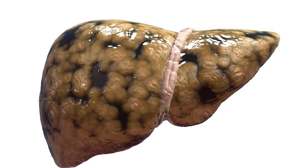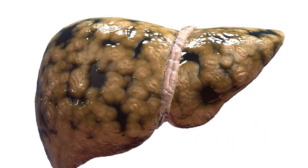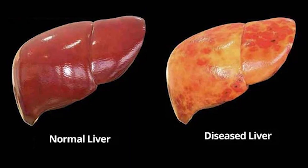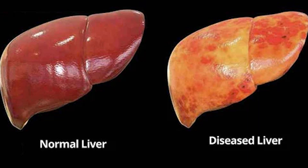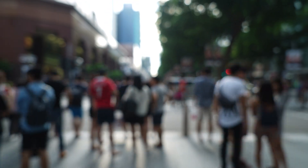Another type of fatty liver disease, known as non-alcoholic fatty liver or hepatic steatosis, is a reversible condition where large vacuoles of triglyceride fat accumulate in liver cells. Non-alcoholic fatty liver is becoming more common as rates of obesity and diabetes rise, and is increasingly common around the world, especially in Western nations. In the United States, it is the most common form of chronic liver disease, affecting about one-quarter of the population. Experts don't know exactly why some people accumulate fat in the liver while others do not, and there is limited understanding of why some fatty livers develop inflammation that progresses to cirrhosis.